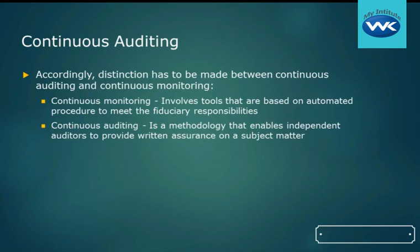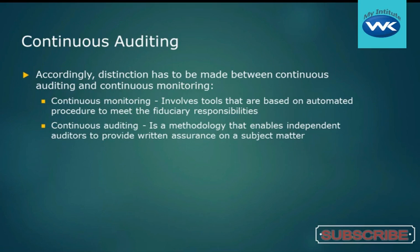There is a distinction between continuous auditing and continuous monitoring. Continuous monitoring will involve tools that are based on an automated procedure to meet the fiduciary responsibilities. For example, antivirus software — you download a file from the internet or get an email, and it automatically scans those documents to look for signs of malware without any prompting. It's designed to continually monitor.